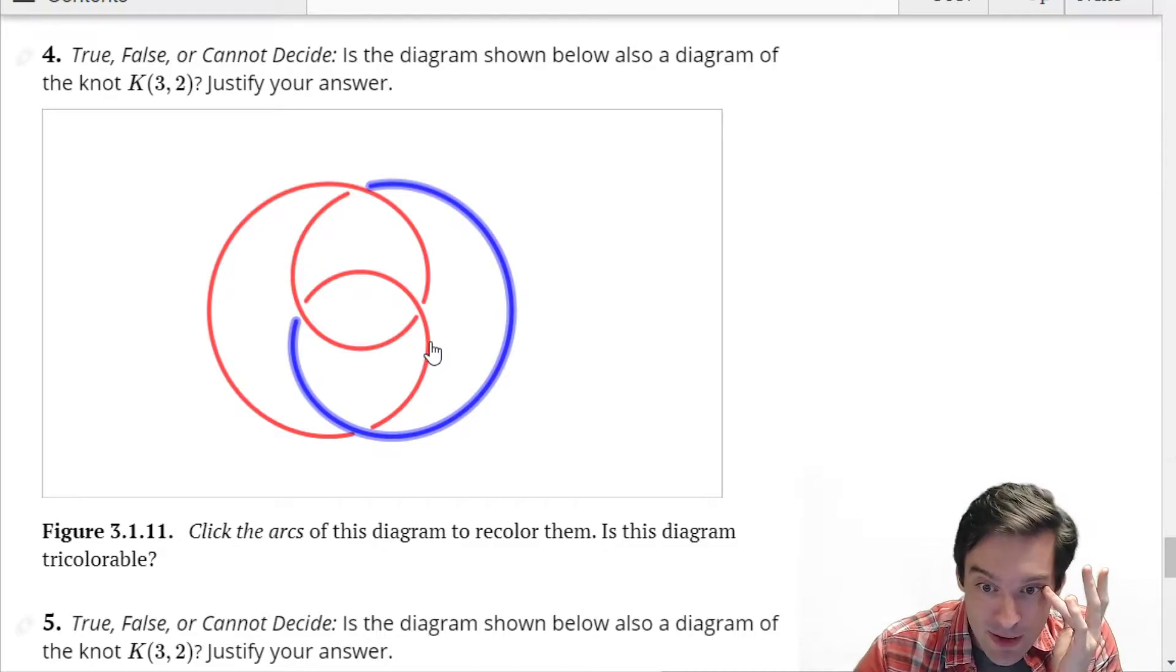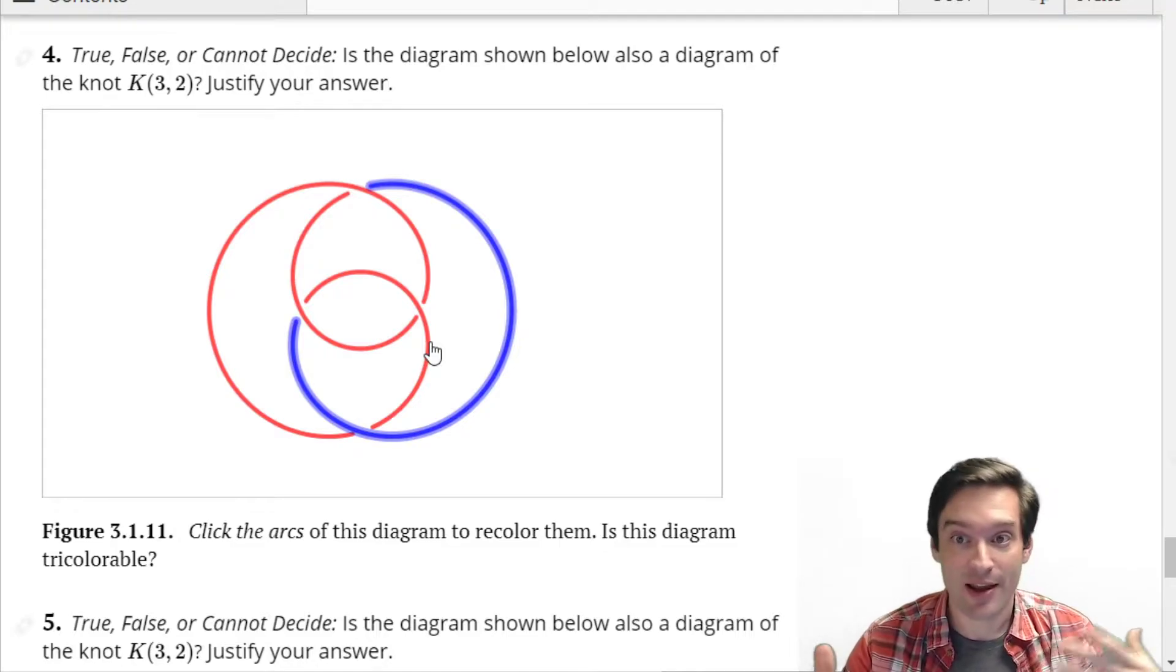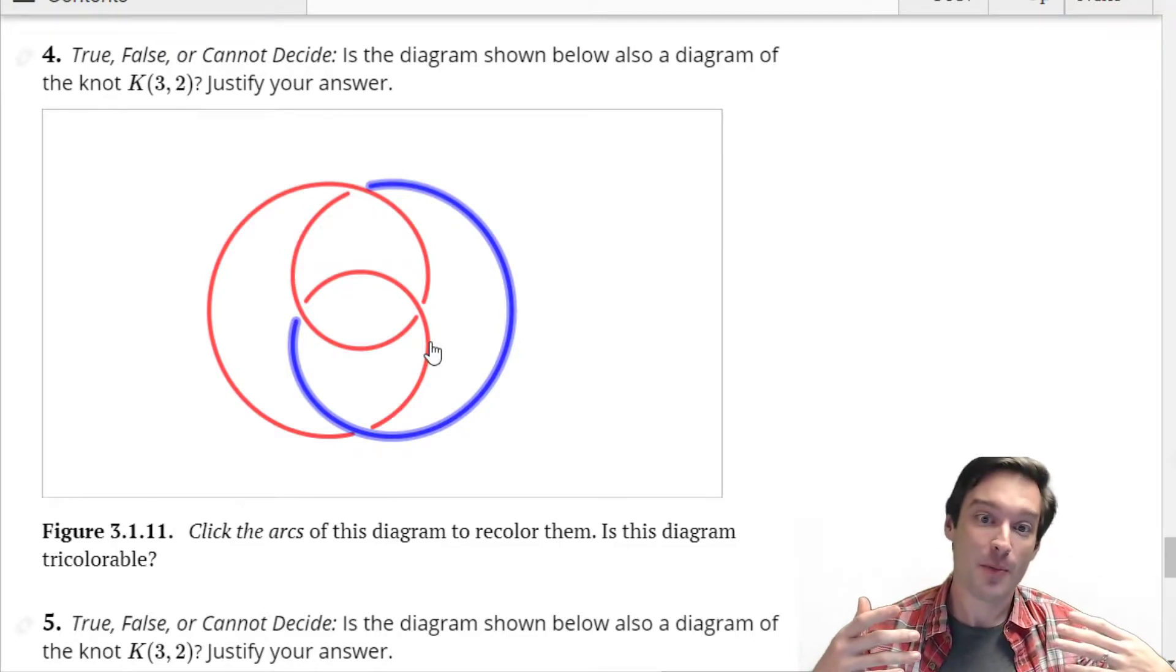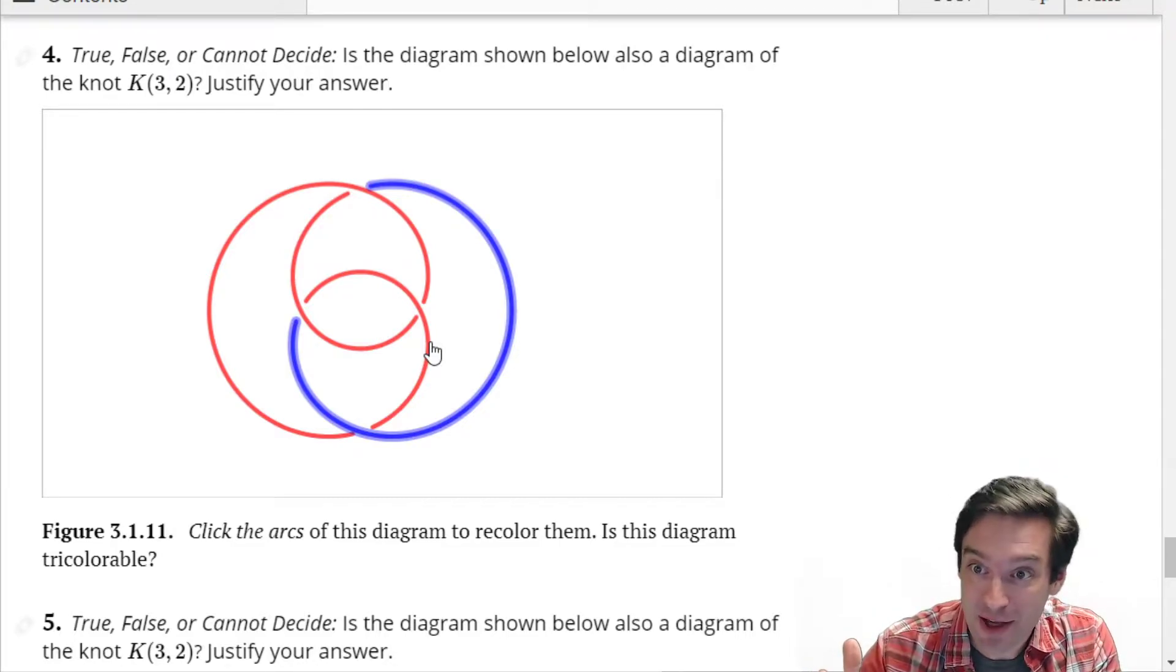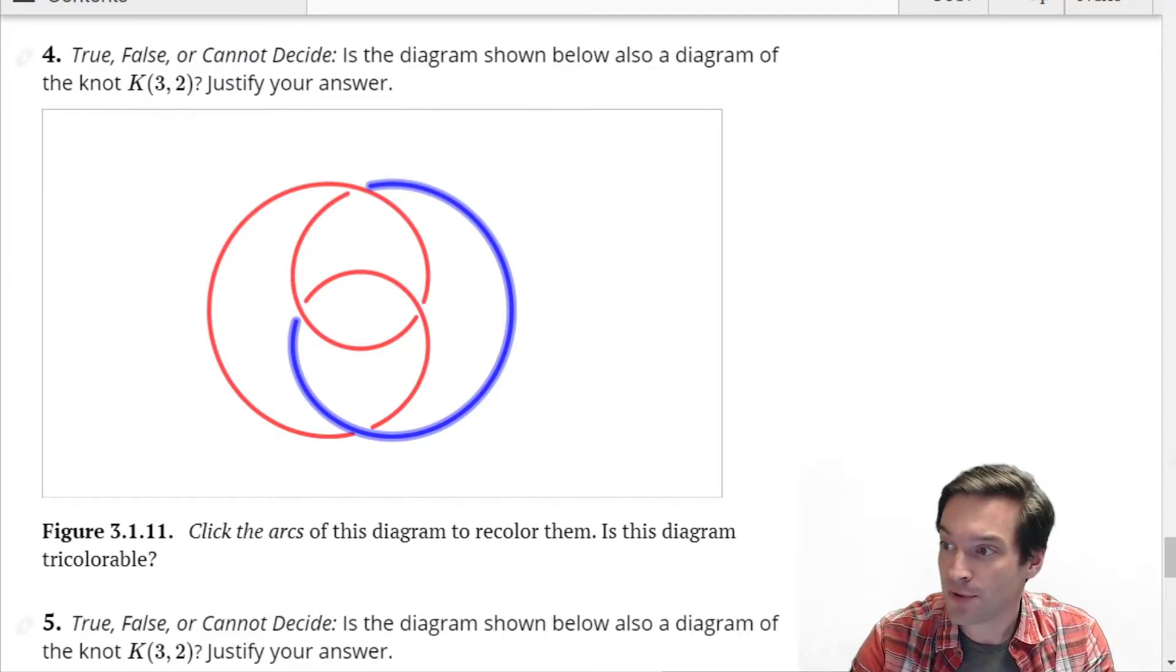What you might think about is how could you prove that this diagram cannot be? So just because you did not find a three coloration, how do we know that we cannot, in fact, find a three coloration? Do you have a way of explaining why that might be the case, or talking us through your thought process for trying to find a three coloration? How close did you get?